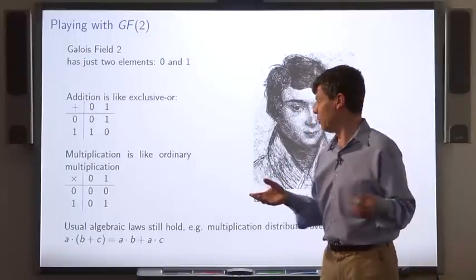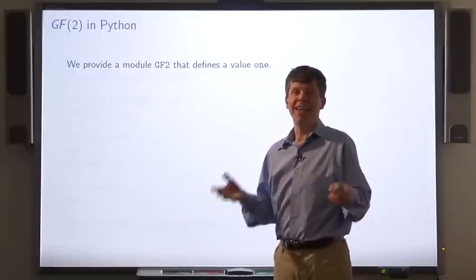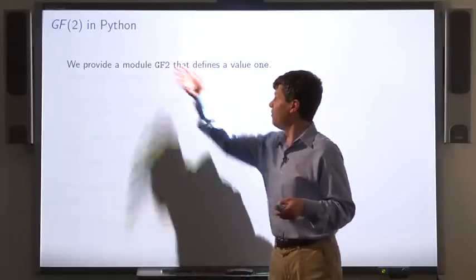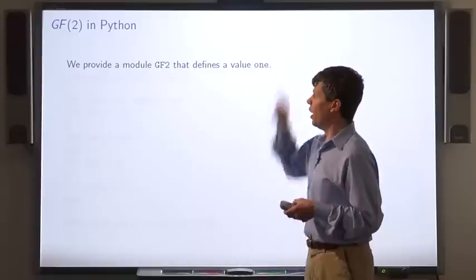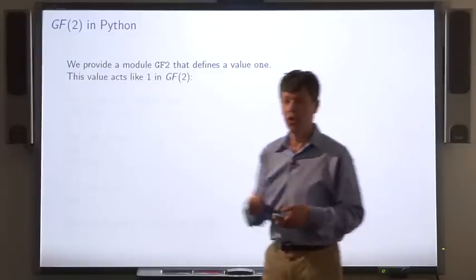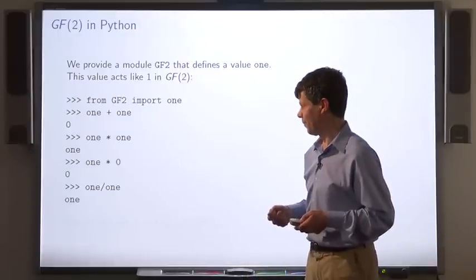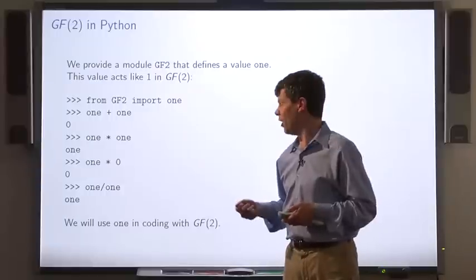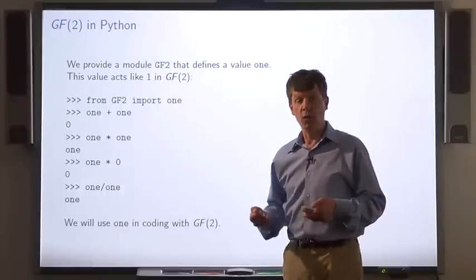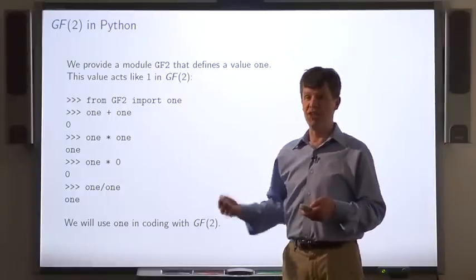We'll provide a simple module called GF2 that defines a value 1. This value acts like the 1 in GF2, and we'll use 1 when we write programs that operate on GF2 values.